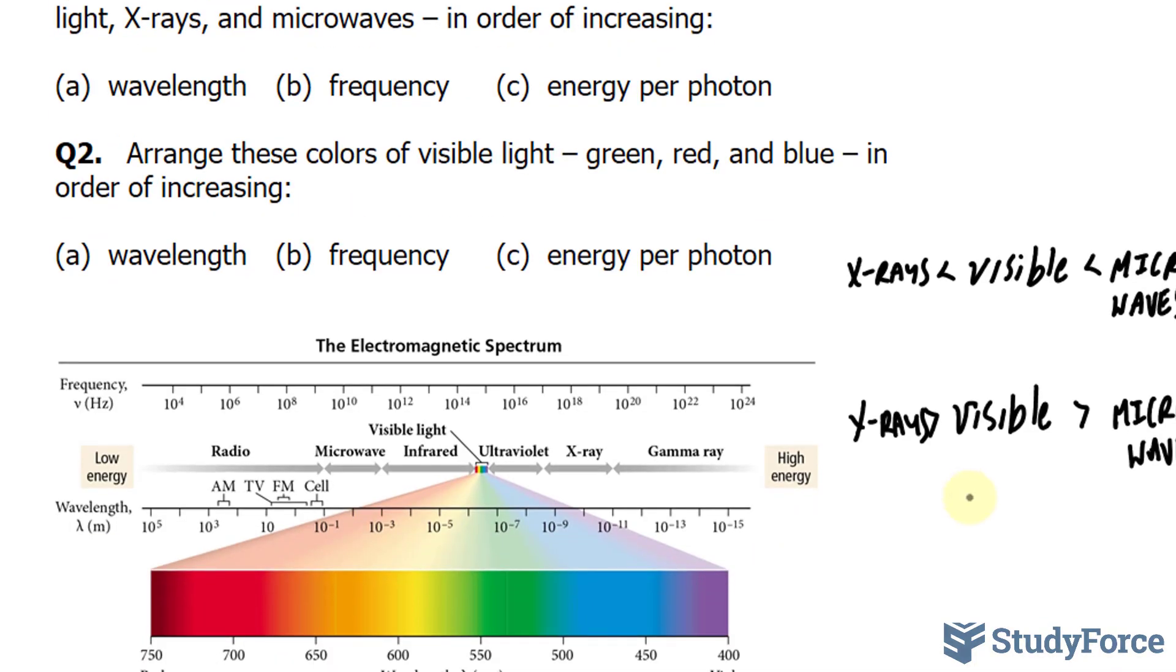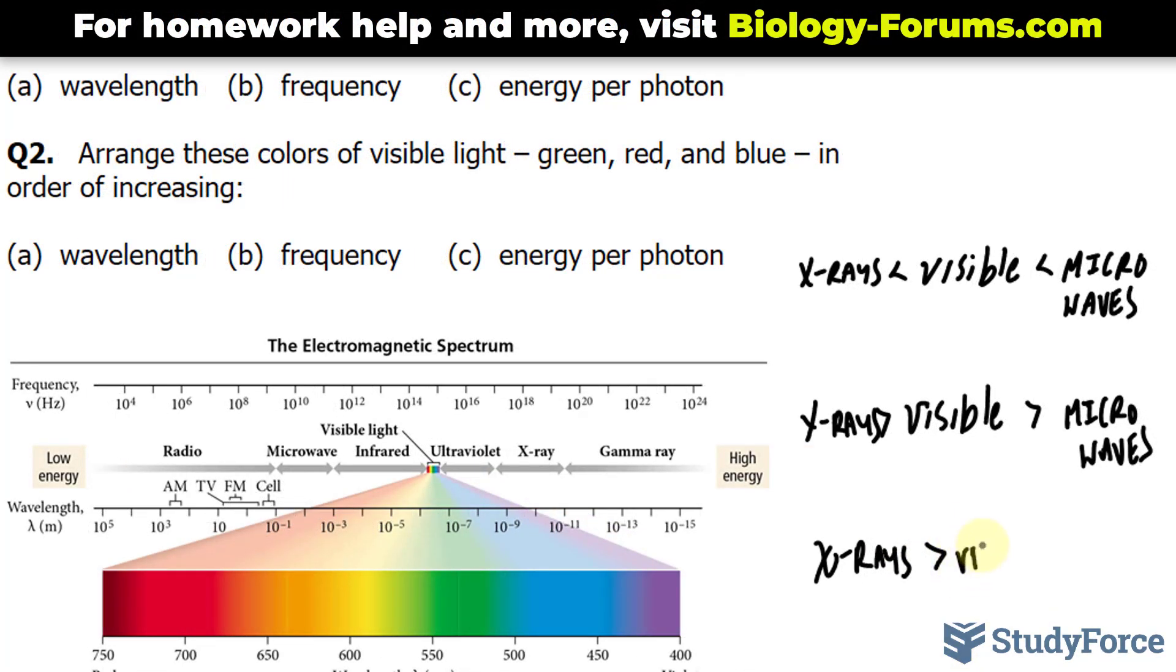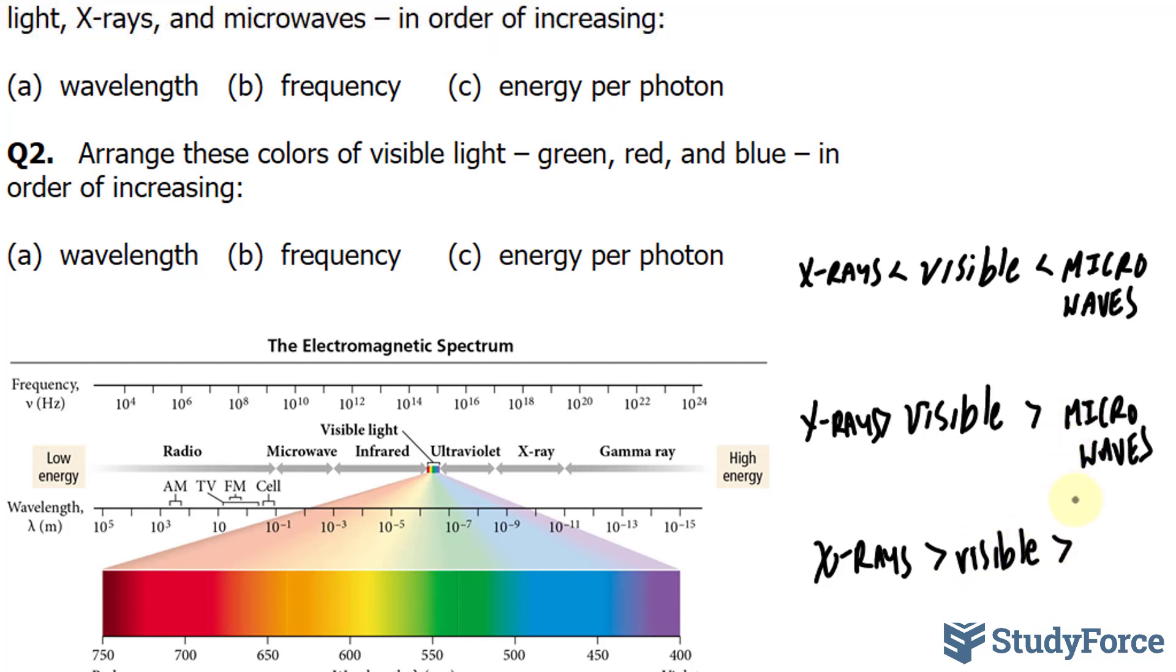So let's write that down. X-rays have a higher energy per photon than visible light, and visible light has a higher energy per photon than microwaves.